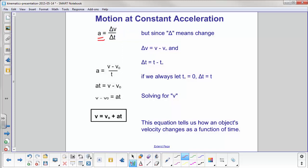Now delta means change, so delta v is your final velocity minus your initial, and delta t is your final time minus your initial time.